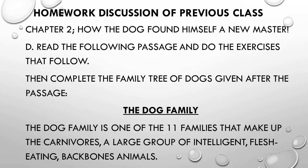Now let's discuss the homework assigned in the last class — Chapter 2, How the Dog Found Himself a New Master. This was the homework left from last class to be discussed. Read the following passage and do the exercises that follow, then complete the family tree of dogs given after the passage. The passage is titled 'The Dog Family.'